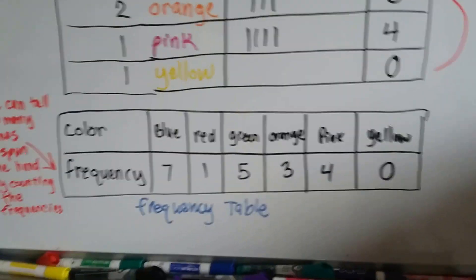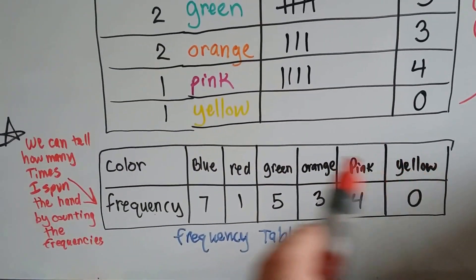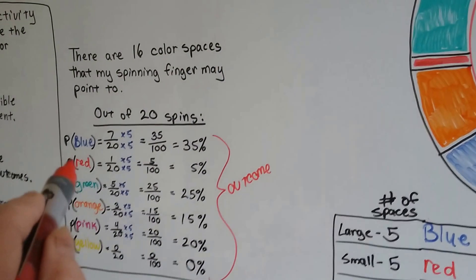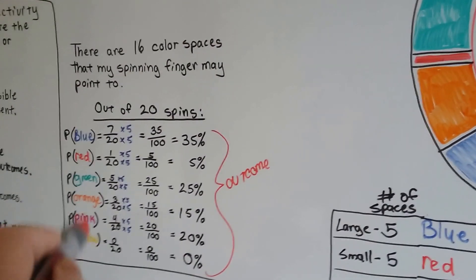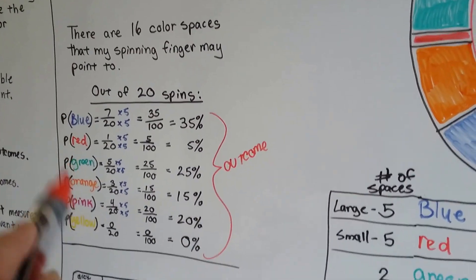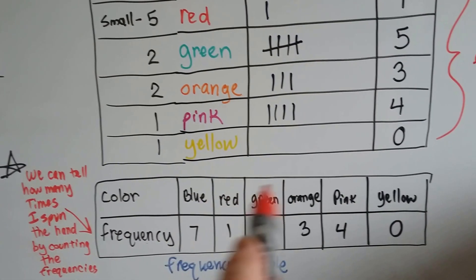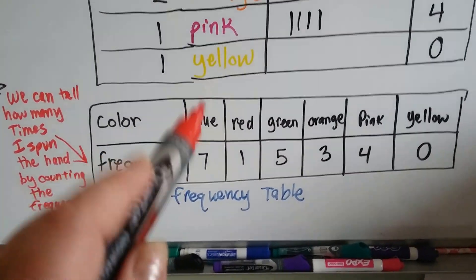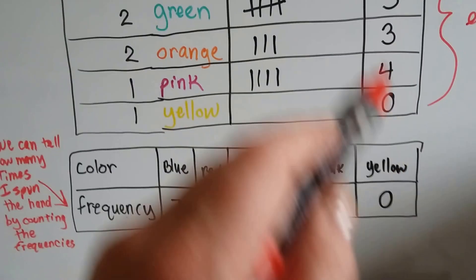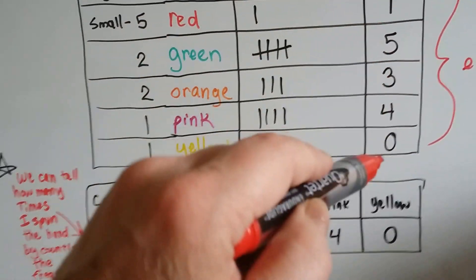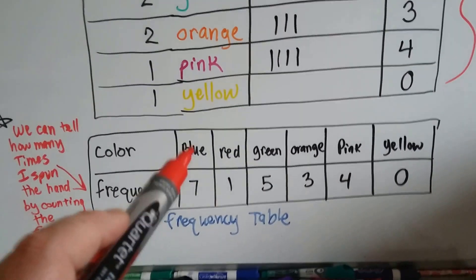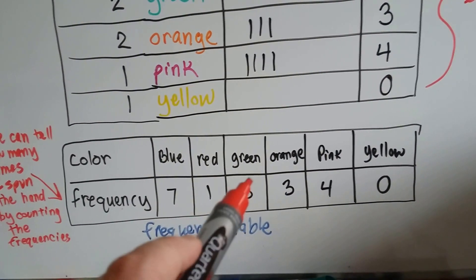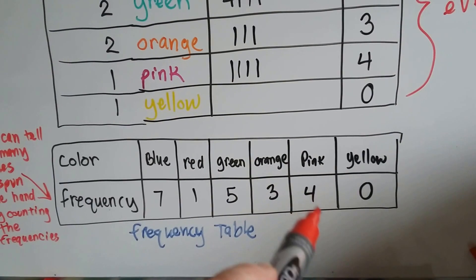So here's my frequency table. Here's the colors, and that would be what would be next to the P. So when you're doing your probabilities, it has a P and then parentheses. That is what goes in the parentheses, whatever is above the frequency. So here's the frequencies of what had happened. It's all the same as these numbers here, the totals. The blue got spun seven times it landed on it. Landed on red one, green five times, orange three times, pink four times, and yellow zero.